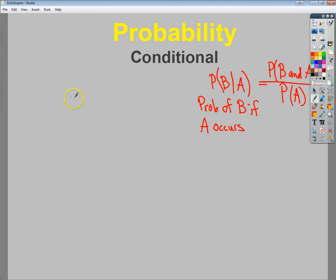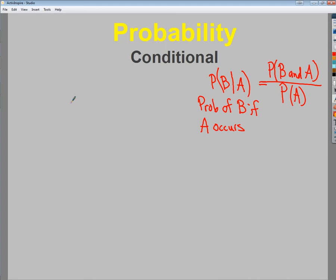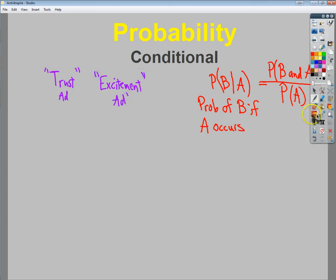So say I have an ad that I'm showing. Say they're doing an emotional setup, and one of them speaks to how you can trust the company. So the trust ad and the other talks about how exciting the product is. So I have those two choices. From there, I want to look at my demographics as families versus individuals.